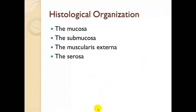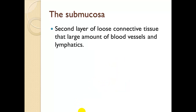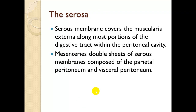Histological organization. We have the mucosa, the submucosa, the muscularis externa, and the serosa. The mucosa is the inner lining of the digestive tract — an example is a mucous membrane. The submucosa is the second layer of loose connective tissue with a large amount of blood vessels and lymphatics. The muscularis externa is a band of smooth muscle cells arranged in an inner circular layer and an outer longitudinal layer; contractions of these layers agitate and propel materials along the digestive tract. The serosa is a serous membrane covering the muscularis externa, along with portions of the digestive tract within the peritoneal cavity.